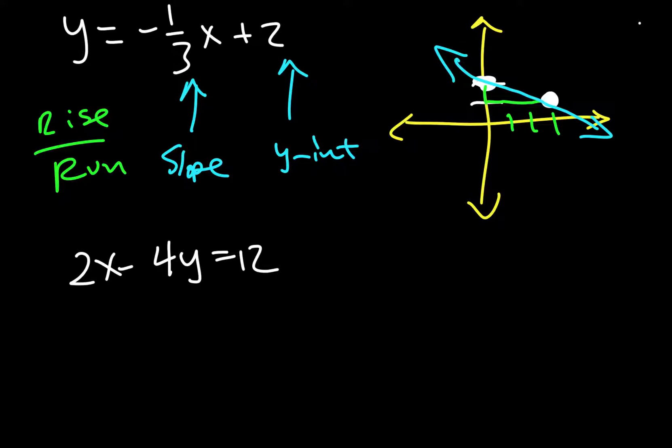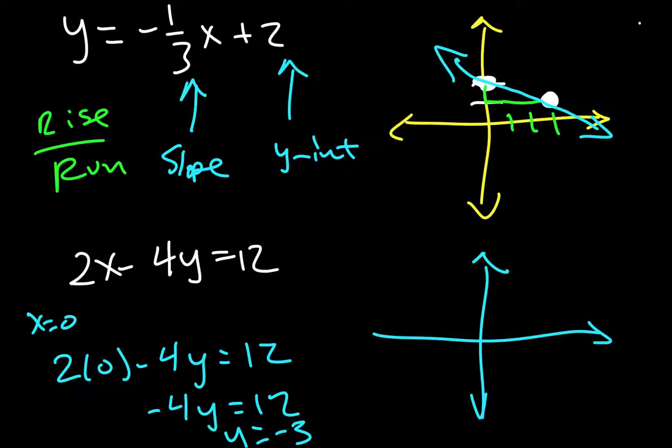But what I'm going to do is I'm going to first plug in x equals 0. And so I'm going to say 2 times 0 minus 4y equals 12. Simplify that. That becomes negative 4y equals 12. Divide by negative 4 and y equals negative 3. So I'm going to come over here on my axes and the y-intercept is negative 3.